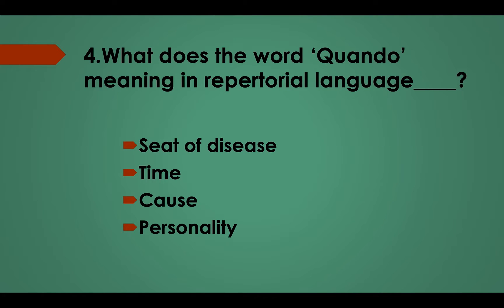Question 4: What does the word 'Kuwando' mean in repertorial language? Option A, Seat of disease; Option B, Time; Option C, Cause; Option D, Personality. Answer: Option B, Time.